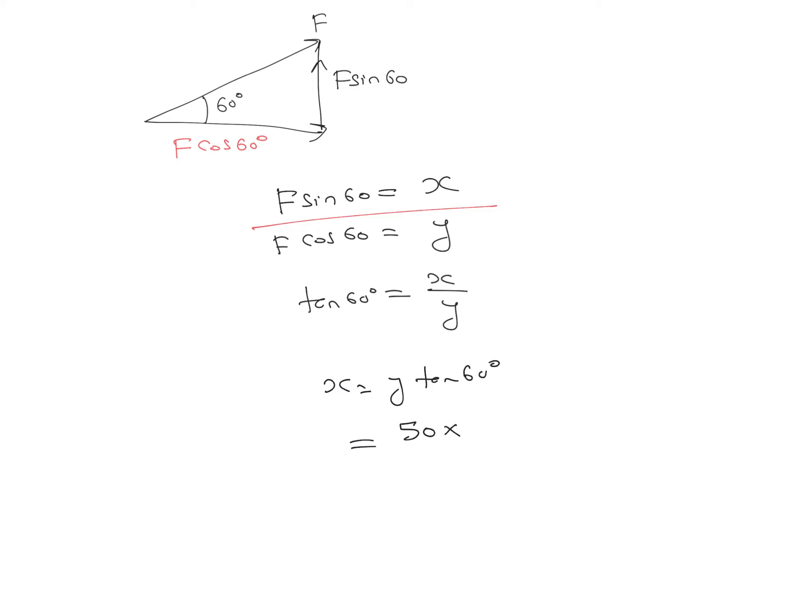Y here is 50, and tan 60 - we know the value of tan 60 is root 3. So the answer will be 50 root 3. The value of root 3 is around 1.73, so if you multiply 50 with 1.73, you get around 86.6, or approximately equal to 87 N.